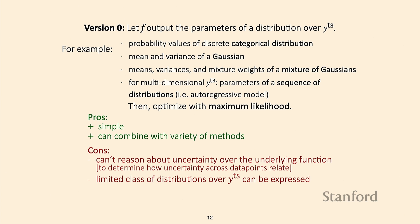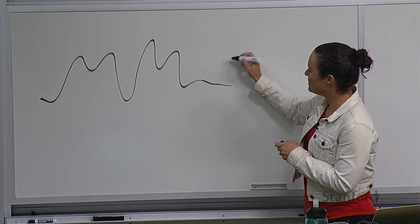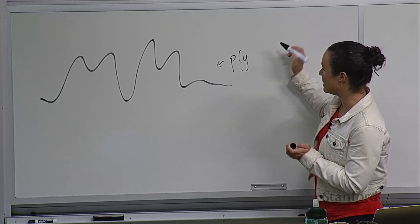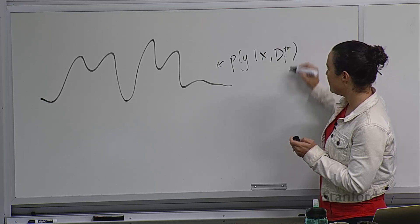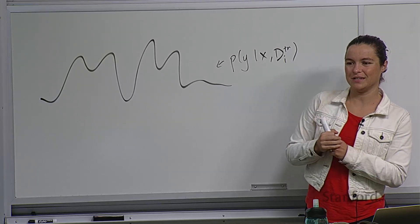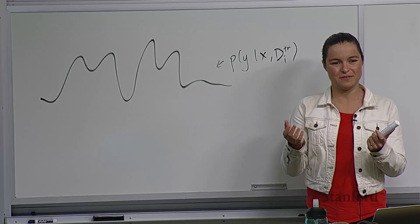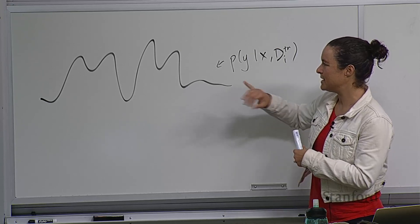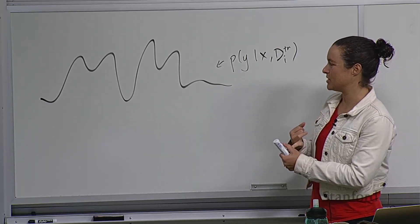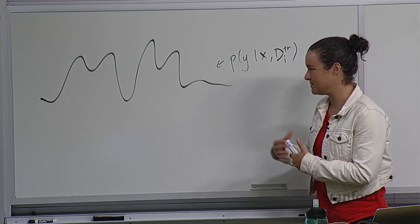Another downside is that you can only capture a limited class of distributions over Y_test. You can output a mean and variance of a Gaussian or a categorical distribution, but outputting some more complex distribution is very difficult to parameterize in a way that's differentiable and well-formed. Also, neural networks trained with maximum likelihood tend to give poorly calibrated uncertainty estimates — if it gives 0.9 for one class and 0.1 for another, that often doesn't mean it will be correct 90% of the time. Neural networks tend to be overconfident.